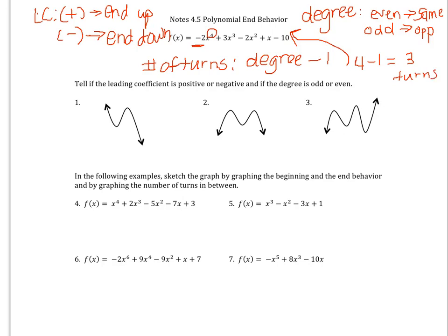Let's look at some examples. The first one says: tell if the leading coefficient is positive or negative, and if the degree is odd or even. Looking at this graph, at the end it's going down, so that means the leading coefficient is negative. Are the arrows going in the same direction or opposite directions? They're going in opposite directions, so — remembering odd, opp — the degree is odd.